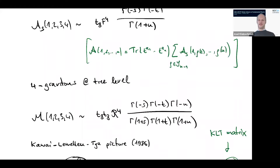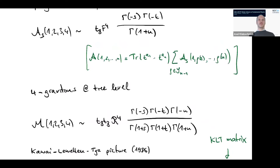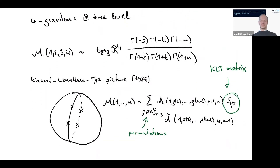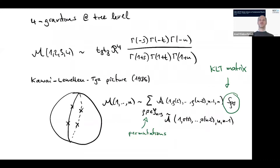At the end of the last lecture, we started discussing the relation between open and closed string scattering amplitudes. The picture going back to Kawai, Lewellen, and Tye is the following: closed string amplitudes are given by integrals over the sphere with punctures. If you take the sphere and cut it into two halves along the punctures, the two halves are topologically disks, and the operators sit on the boundary of these disks. This gives the idea that a closed string amplitude M should factorize into a product of two open string amplitudes.